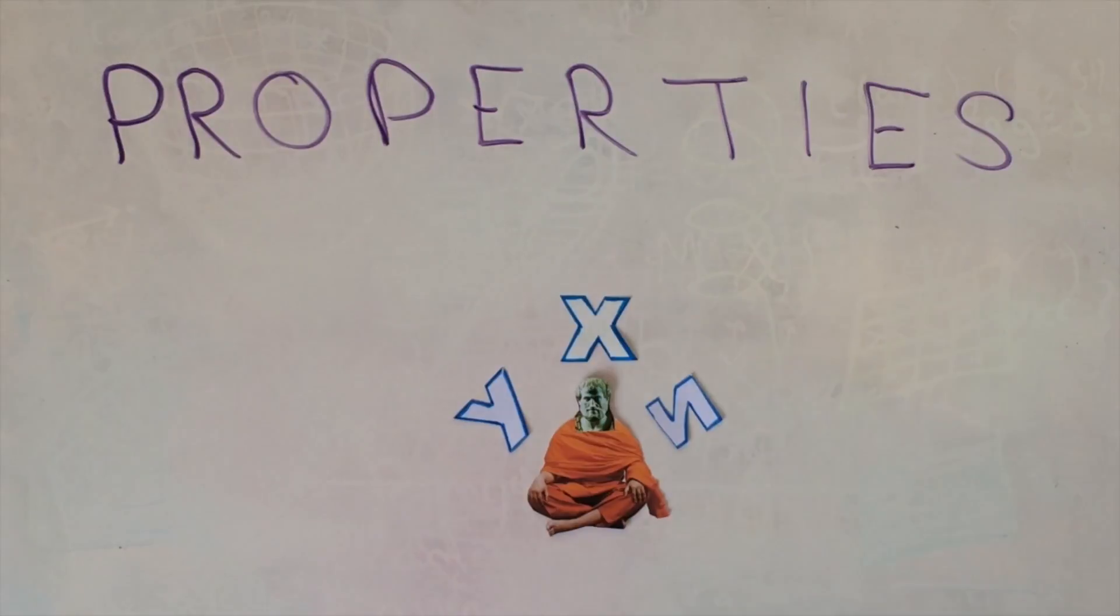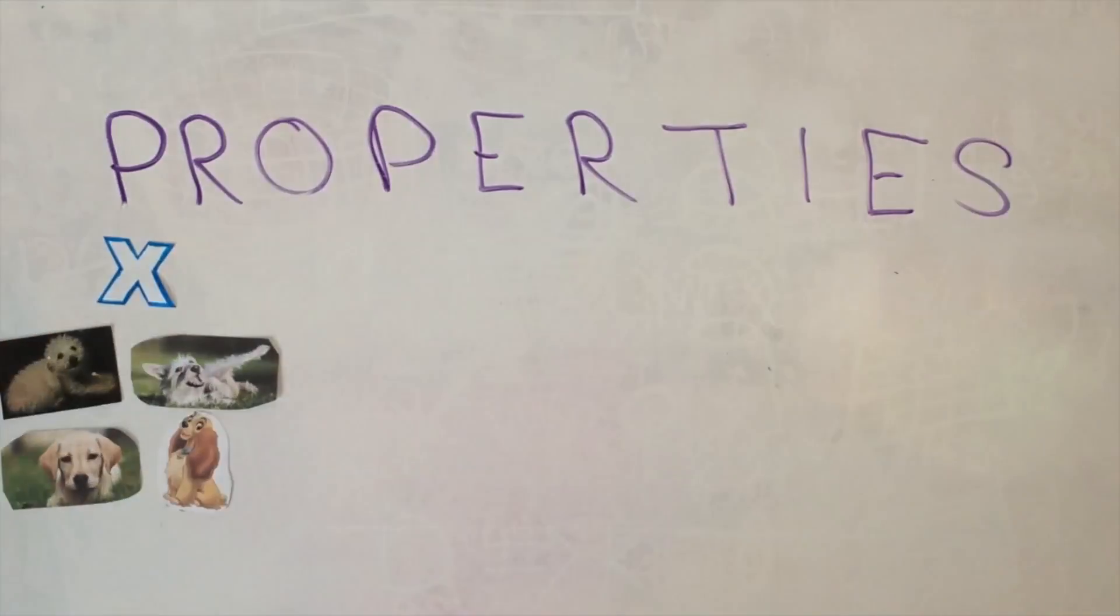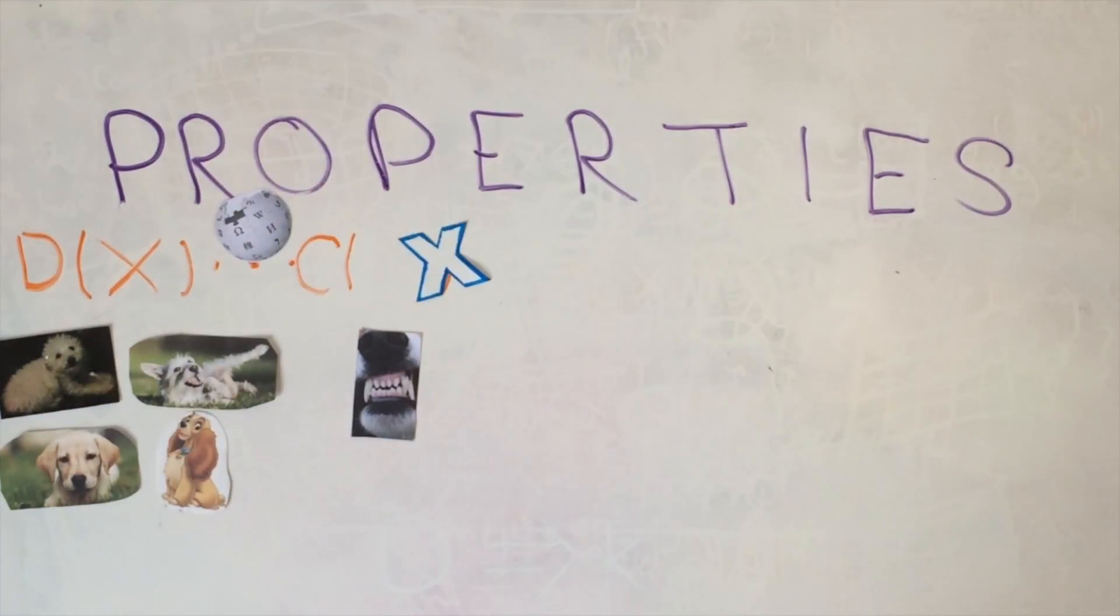As a simple example, suppose that the only thing you know about X is that it is a dog. Then, according to Wikipedia, X is a canine.